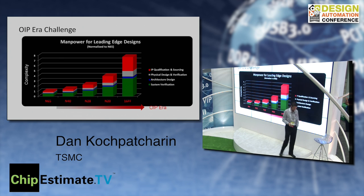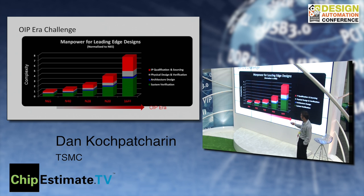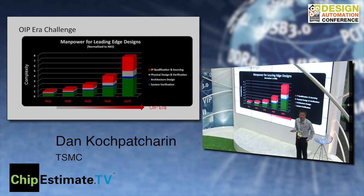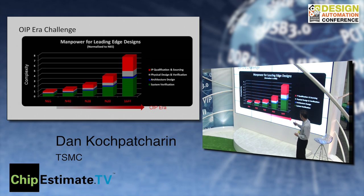This is data from IBS on the relative complexity of design, normalized to 65 nanometer. At 40 nanometer it's getting more difficult, at 28 nanometer even more so. The red color represents IP qualification time. At 16 and 20 nanometer, the time to source and find all the IPs is a big chunk of the design effort. Modern chips have USB, HDMI, all kinds of IPs — analog blocks, PLL, standard cells, memory in many different varieties — and you have to source and find the right ones.